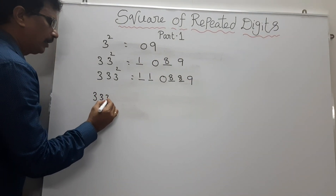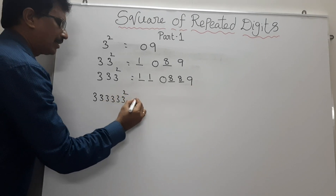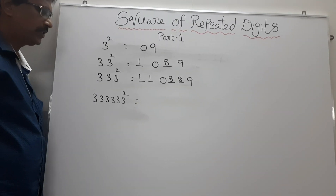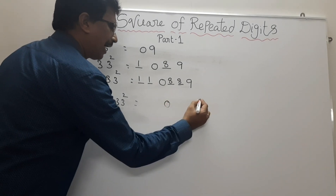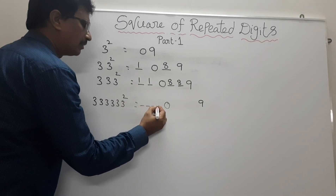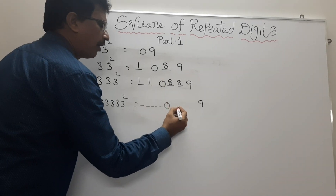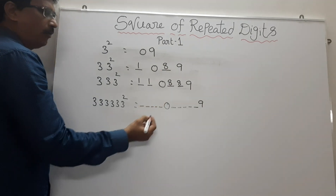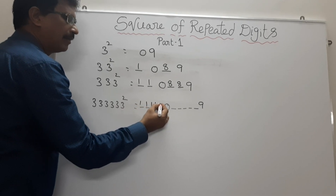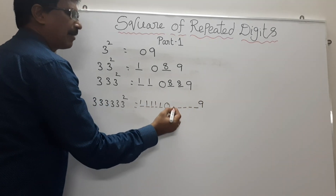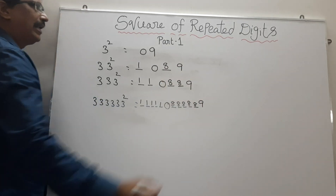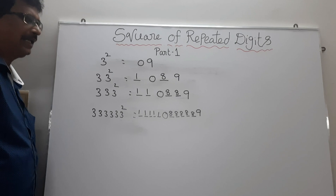Suppose we have 1, 2, 3, 4, 5, 6 — that is six 3's squared. Here there are six 3's. Now we have to find this value without using a calculator. We know that 3 squared equals to 09. There are 6 digits, so we have to insert 5 blanks before 0 and 5 blanks after 0. We have to add 1 for this number: 0 plus 1 is 1, giving five 1's. We have to subtract 1 from 9: 9 minus 1 is 8, giving five 8's. So we can easily find the squares of repeated digits of 3.